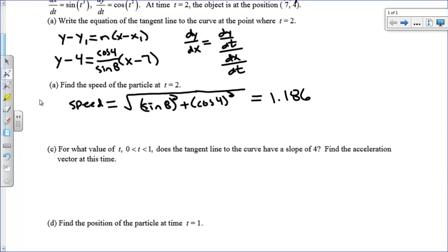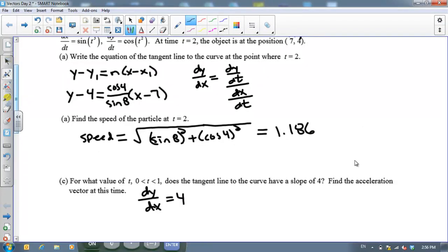All right. Next question asks, for what value of t from 0 to 1 does this tangent line have a slope of 4? So we want to know when does dy dx equal 4, but on the interval from 0 to 1? Now on this one, I've actually graphed this on my calculator. So we're going to get back to the calculator and take a look at this.